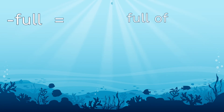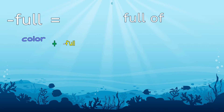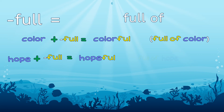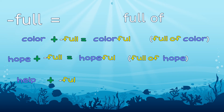The suffix -ful means full of. Here are some ways that the suffix -ful changes the meaning of some base words. Our first example is the word color — by adding the suffix -ful, we make the word colorful, which means full of color. In the base word hope, by adding -ful, we make the word hopeful, which means full of hope. In the base word help, by adding -ful, we make the word helpful, which means full of help.